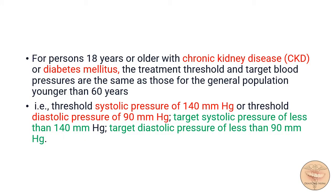For persons 18 years or older with chronic kidney disease or diabetes mellitus, the treatment threshold and target blood pressure are the same as those for the general population younger than 60 years — that is, a threshold systolic pressure of 140 mmHg or threshold diastolic pressure of 90 mmHg, with a target systolic pressure of less than 140 mmHg and target diastolic of less than 90 mmHg.